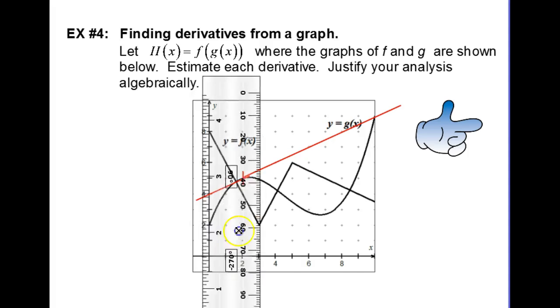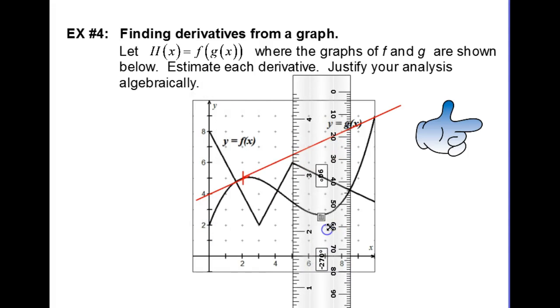So now I'm going to move my ruler over to 5 and we are sketching, finding the slope of the line that passes through this point.